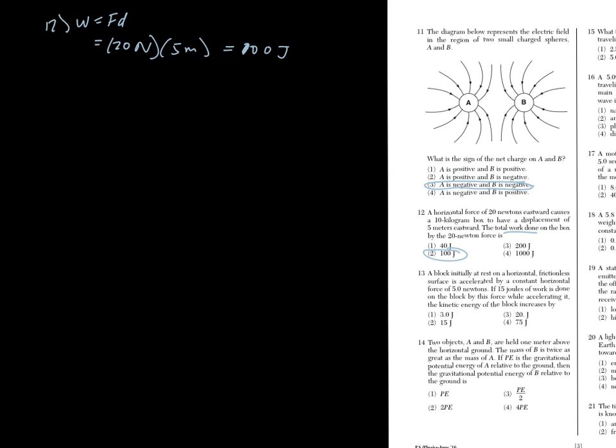The block initially at rest is accelerated. 15 joules of work is done on the block. Then the kinetic energy of the block increases by what? So the work you do to move the box is equal to the object's change in kinetic energy. So you release all that energy as work, the box absorbs it to give it kinetic energy. So if you give it 15 joules of work, then your change in kinetic energy will also be 15 joules.